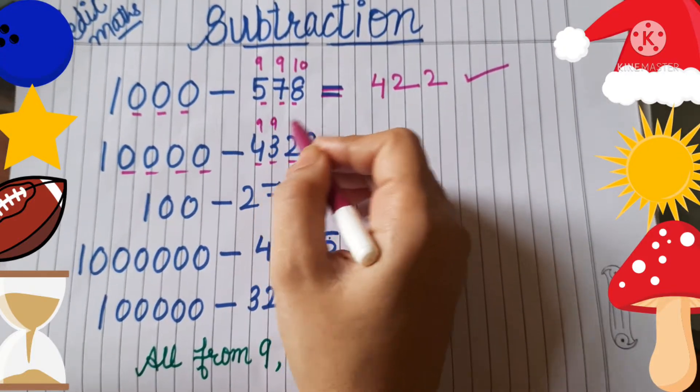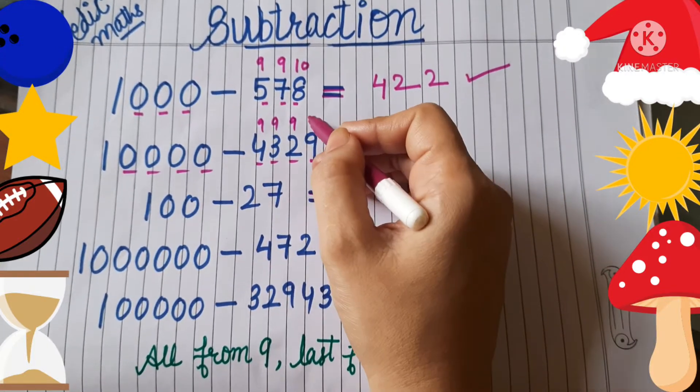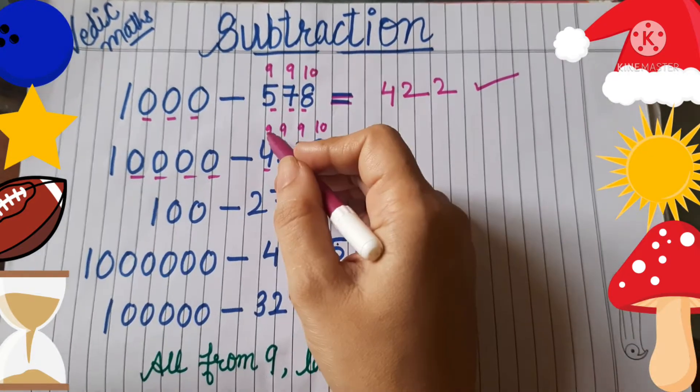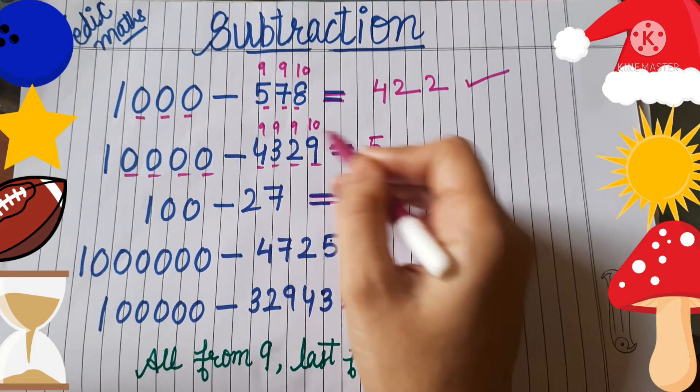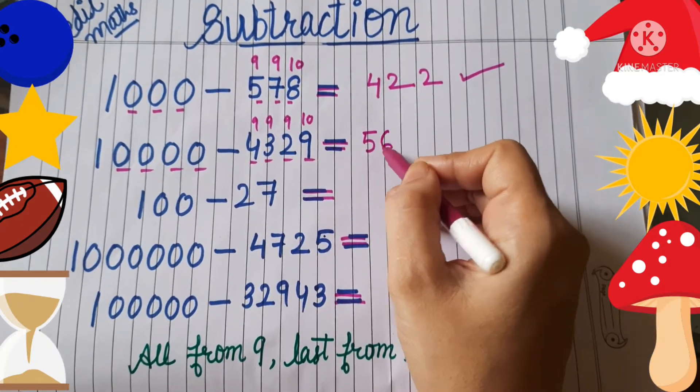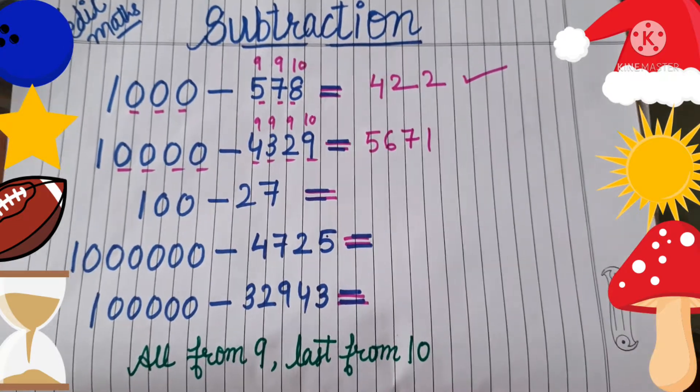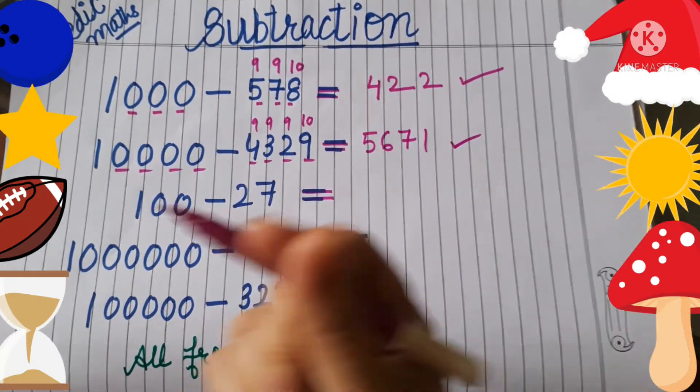Then write upside 9, 9, 9, but the last digit upside will be written by 10. Now subtract the term. 9 minus 4 is 5, 9 minus 3 is 6, 9 minus 2 is 7, 10 minus 9 is 1. That's done within 1 second.